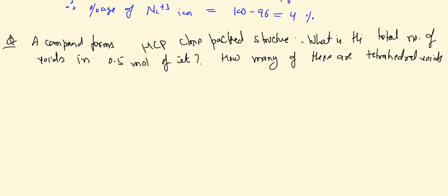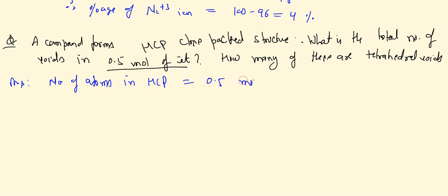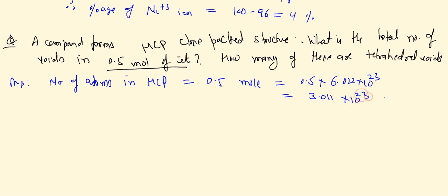The next question: a compound showing XCP (close-packed) arrangement — find the total number of voids in 0.5 mole and how many are tetrahedral voids. Number of atoms in 0.5 mol = 0.5 × 6.022 × 10²³ = 3.011 × 10²³ atoms.